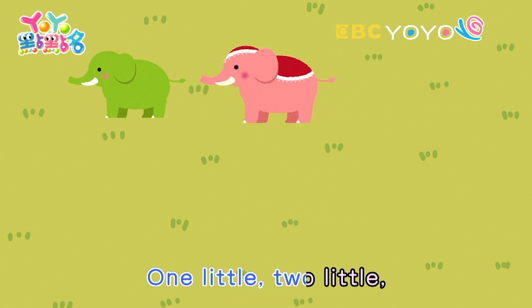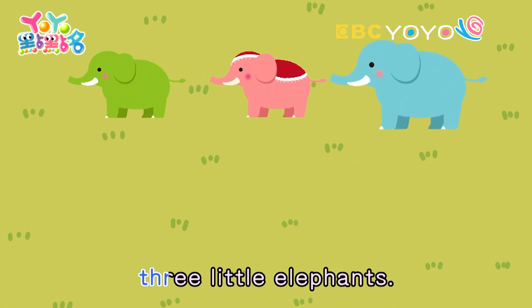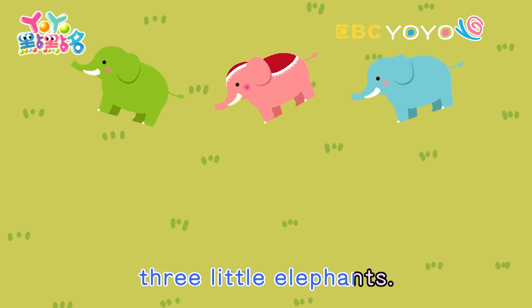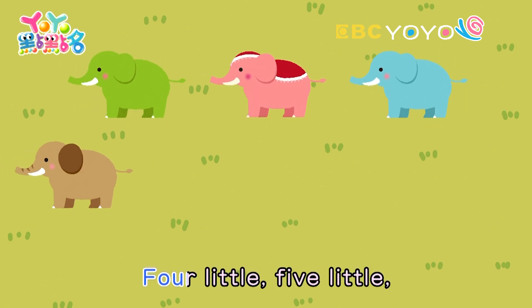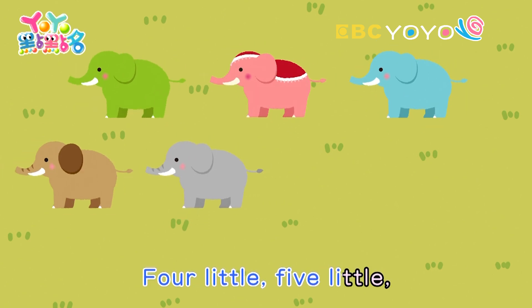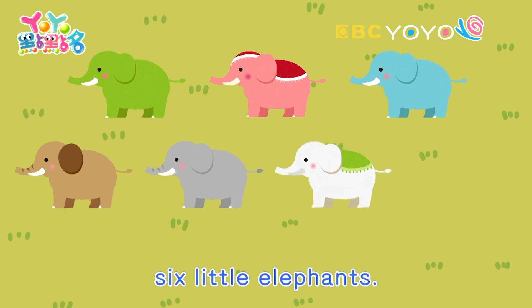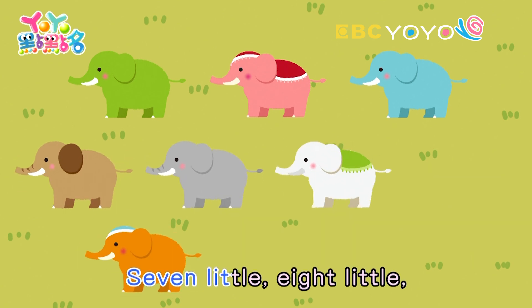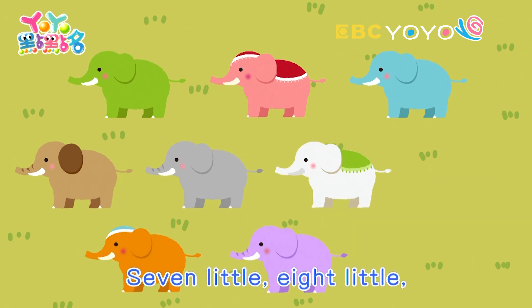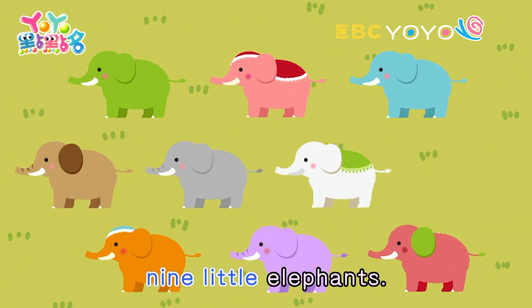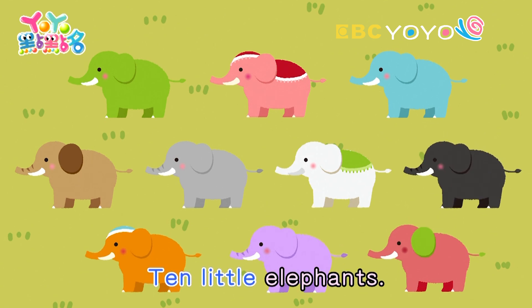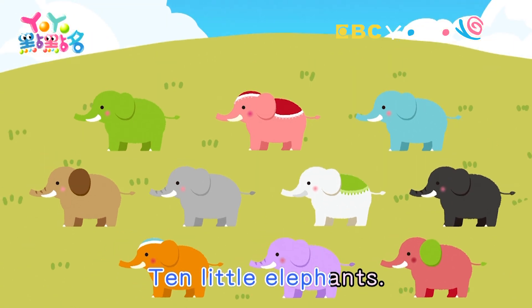One little, two little, three little elephants. Four little, five little, six little elephants. Seven little, eight little, nine little elephants. Ten little elephants.